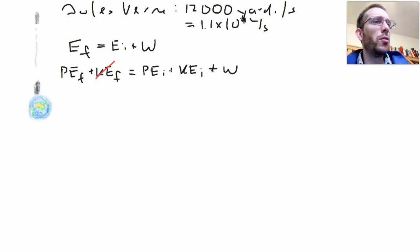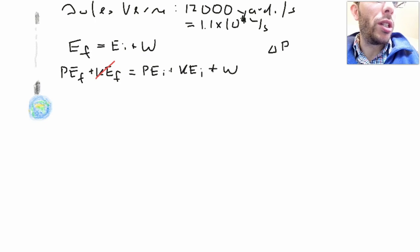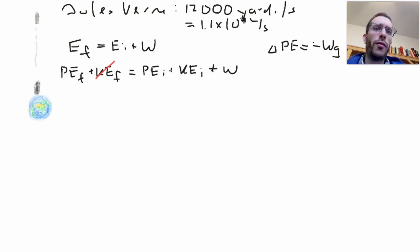But I can use the old trick that the change in potential energy is minus the work done by gravity. So instead of considering the potential energies, I'm going to be considering the work done by gravity. And gravity being the only force that actually acts on my object.